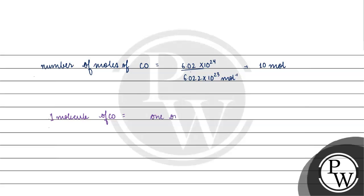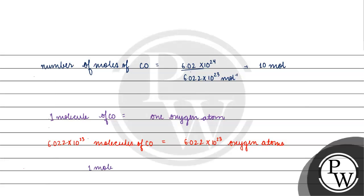Since 1 molecule of CO has 1 oxygen atom, 6.022 × 10²³ molecules of CO will have 6.022 × 10²³ oxygen atoms. Basically, 1 mole of CO will present 1 mole of oxygen atoms. So if we have 10 moles of CO, we will have 10 moles of oxygen atoms.